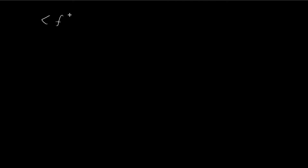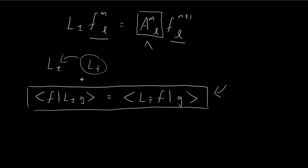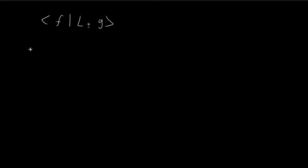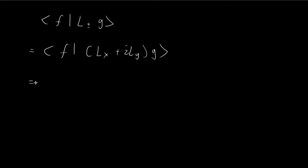To show that L∓ is the Hermitian conjugate of L±, we start off with the left-hand side expression and work to see if this leads to the right-hand side expression. We start with ⟨F | L± G⟩ and apply the definition for L±, which is equal to ⟨F | (Lx ± iLy) G⟩. Since these are all linear operators, we can break apart the bracket.